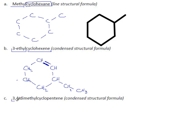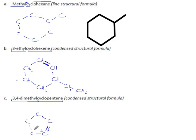Next: 3,4-dimethylcyclopentene. Cyclopentene means five carbons in a ring — pent means five — and pentene means there's a double bond; I'll put it at the bottom. Single bonds everywhere except for the one double bond. The numbering goes: carbon one, two, three, four, five. Carbon number three has a methyl group on it, and carbon number four also has a methyl group on it.